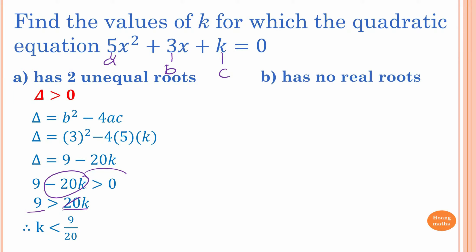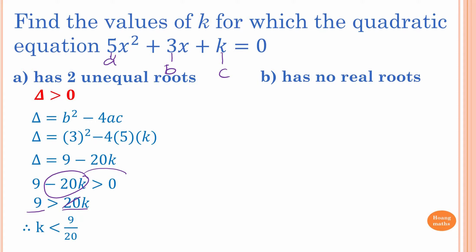Find the value of k for which the quadratic has no real roots. No real roots means the graph is up here — it has no solutions. This means the discriminant must be less than 0.